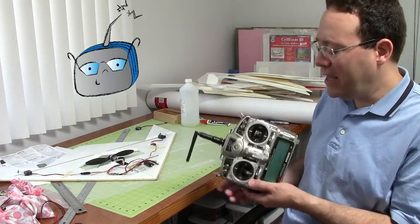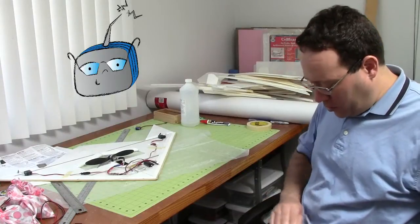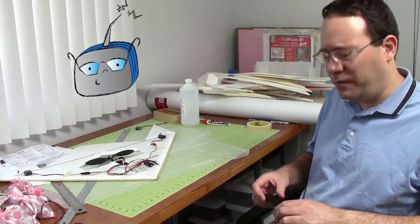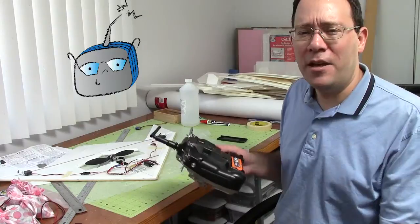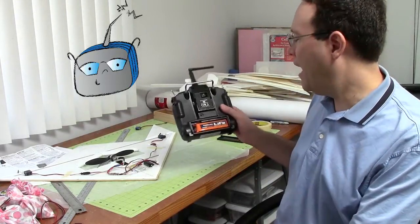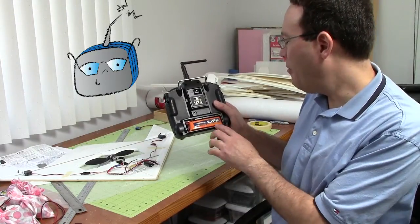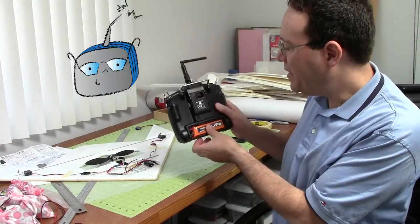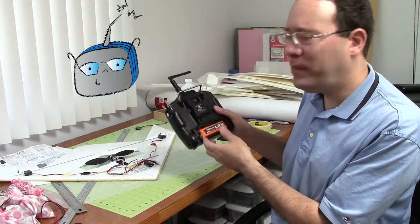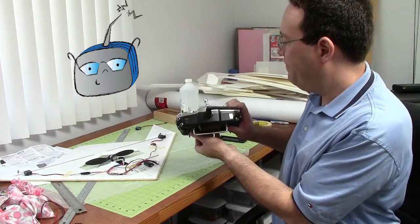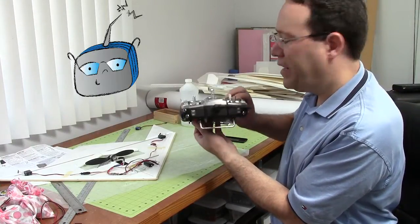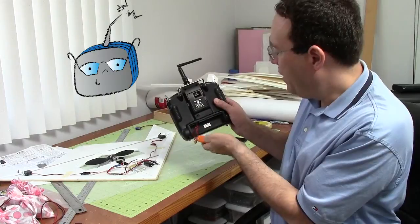So I ended up buying what's called a lithium iron phosphate battery. People call them by different names - LiFe or LFP batteries. And this one is from Havikane and it's designed to fit right in popular transmitters. And this is a JR 9303 and the battery just fit right in there.